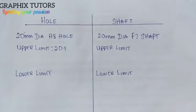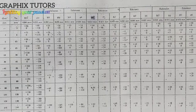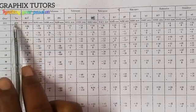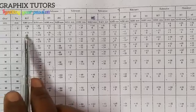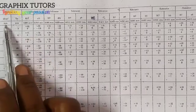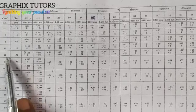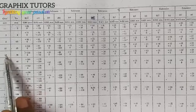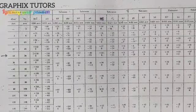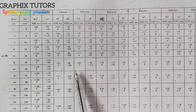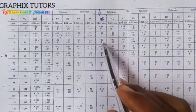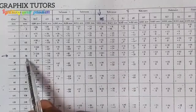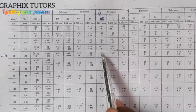That takes us to our BS4500 table. These are the nominal sizes, and you are going to check where your 20mm diameter falls in. The range goes: over 3 to 6, and so on. Since 20mm falls between 18 and 30, we take that row. Now, we are looking at H8. Where H8 and the 18-to-30 size row meet, we have plus 33 and 0. The plus 33 is for the upper limit deviation and the 0 is for the lower limit deviation.